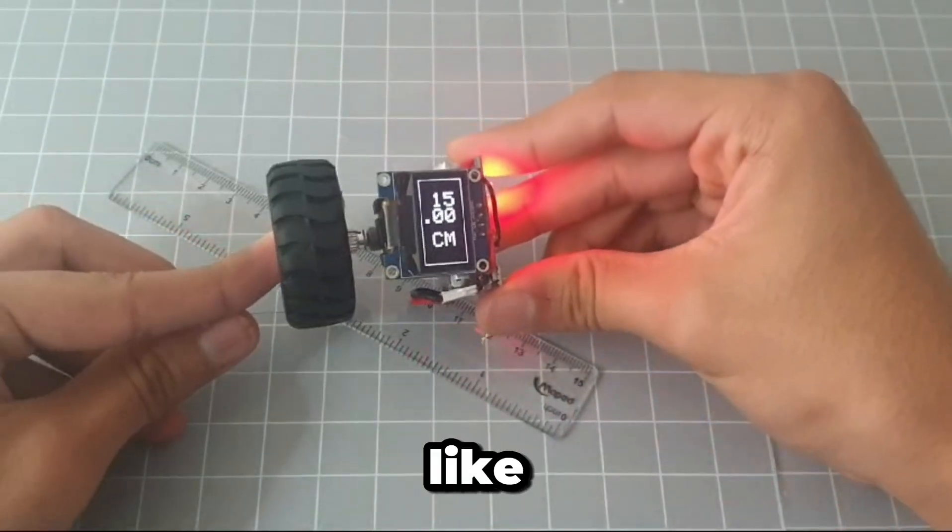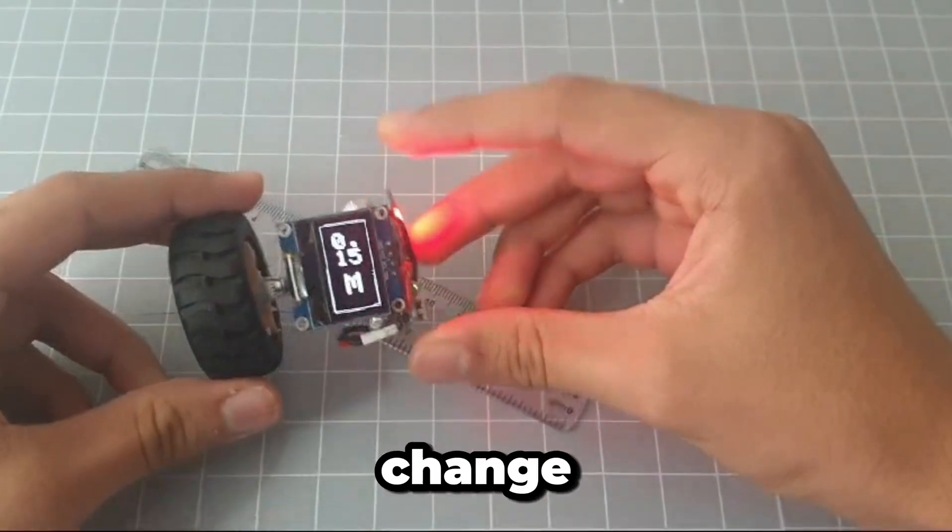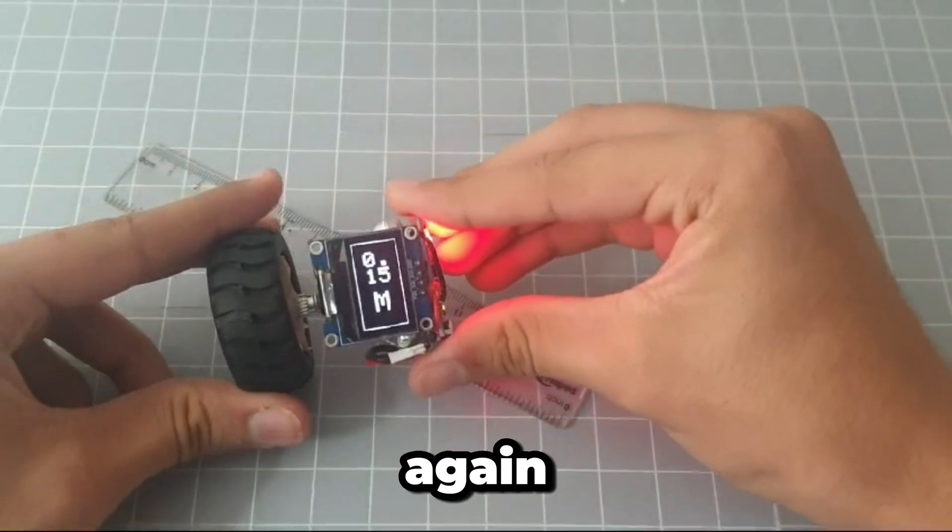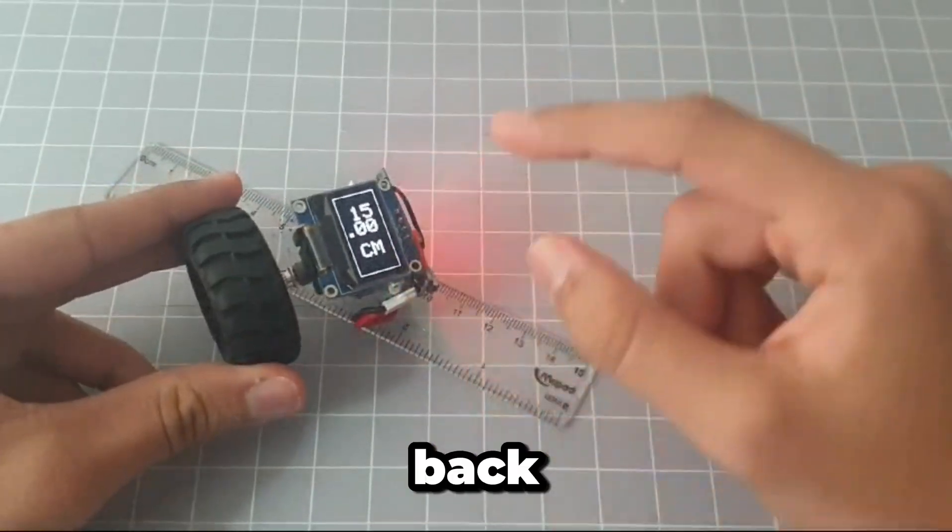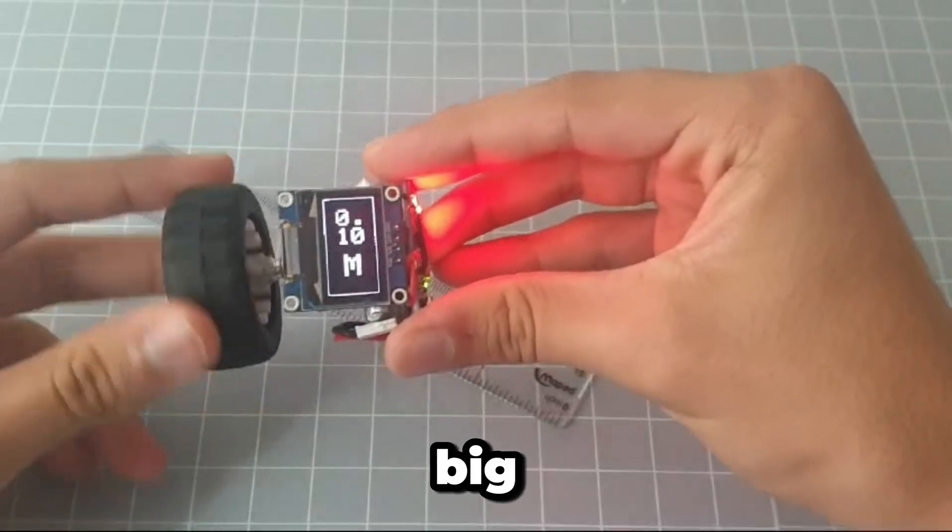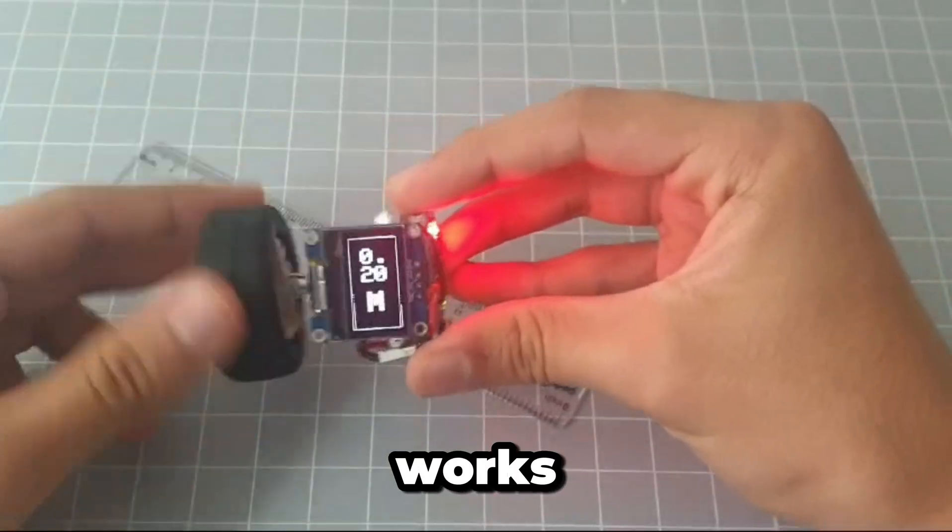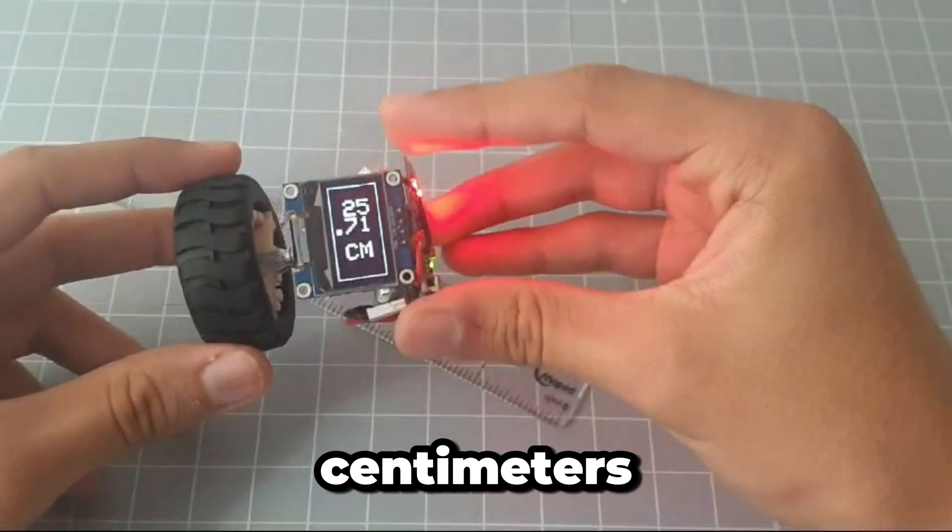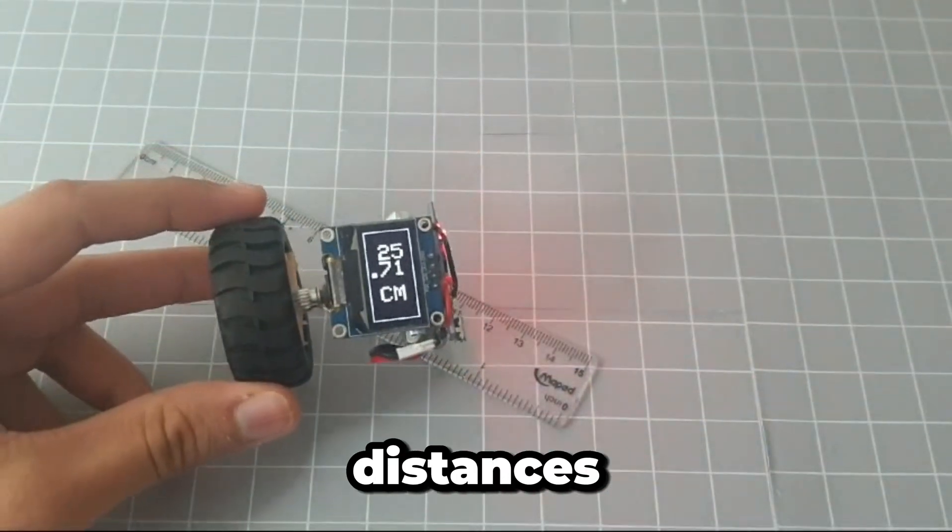So when you click it like this, you can change the units and if you click it again, it will change it back to centimeters. So we have meters here for big distances and it still works as you can see, and we have centimeters here for small distances.